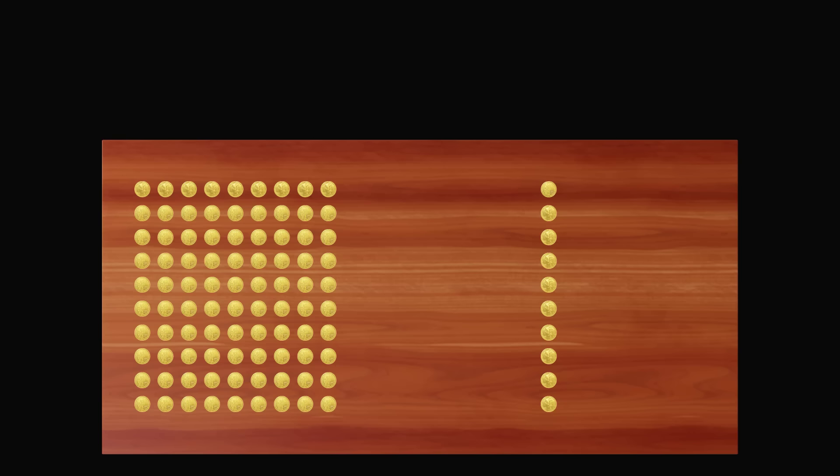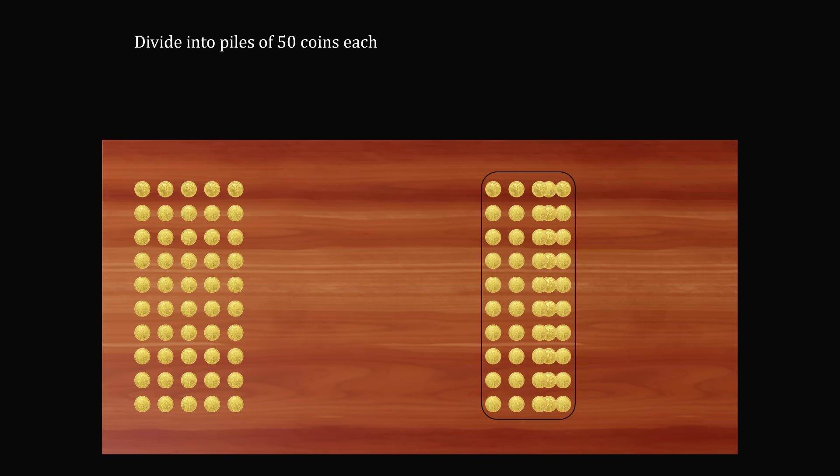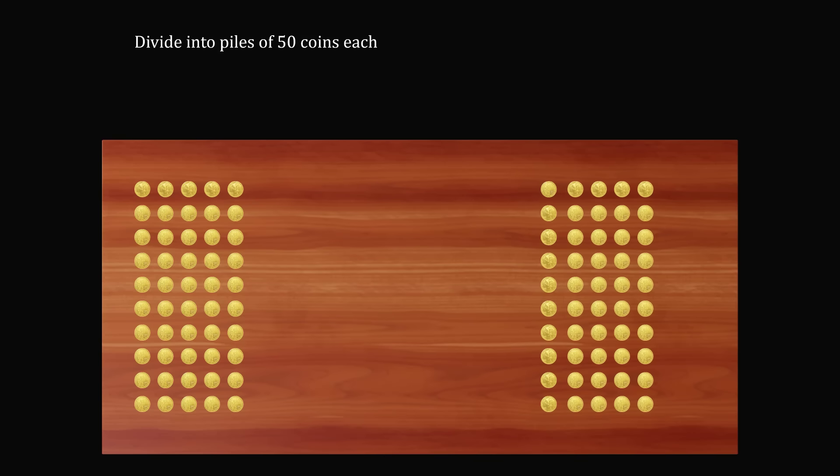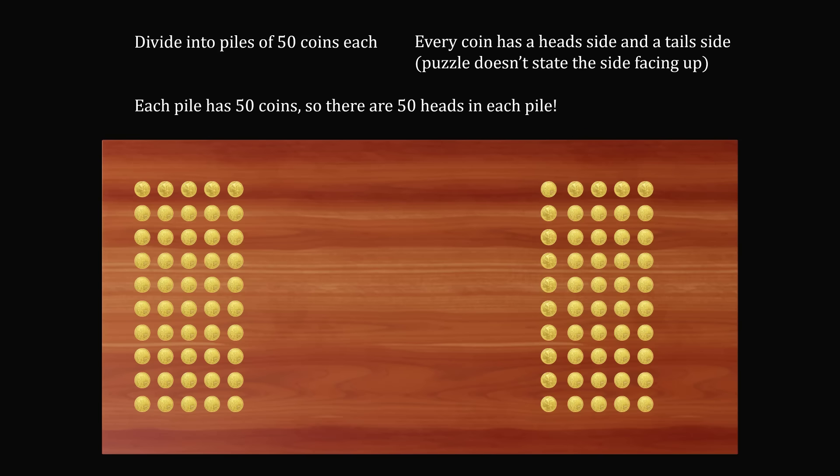So here's a different way of approaching the problem. Instead of moving 10 coins and flipping them, let's just start out by dividing into two piles of 50 coins each. So now, there are the same number of coins on both sides. However, you don't know that there are the same number of heads showing face up. But wait a minute! Every coin has a head side and a tail side. The puzzle doesn't state that it has to be the side facing up. We now have two piles of coins and each pile has 50 coins. So there are 50 heads in each pile! Both piles are showing the same number of heads! Ta-da!